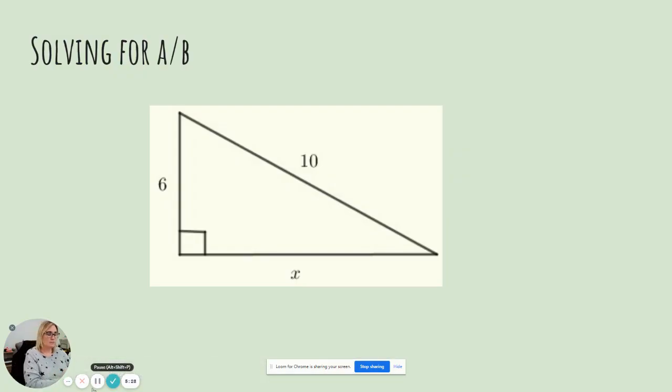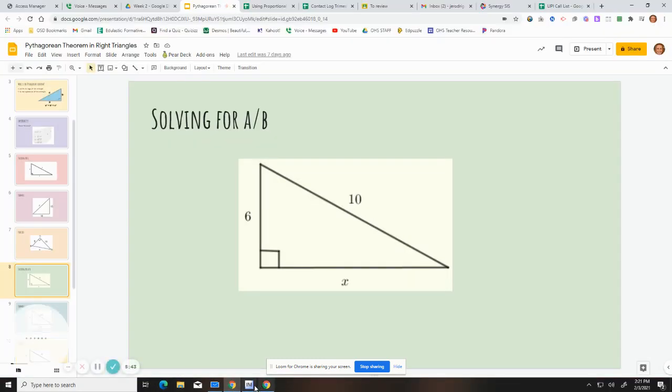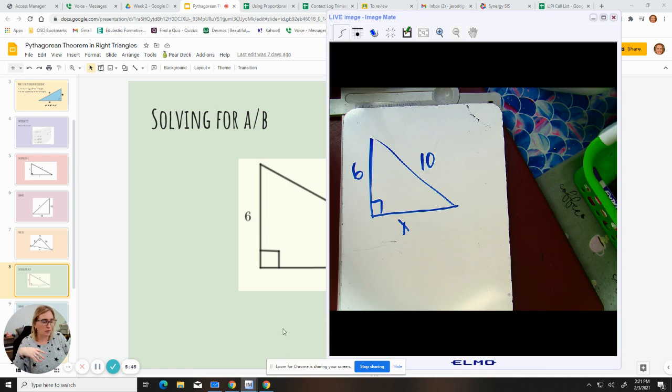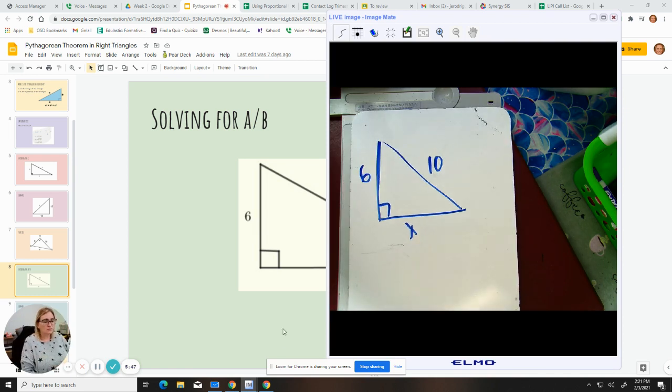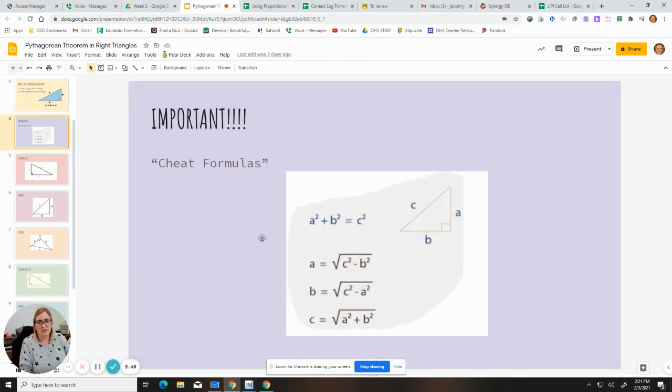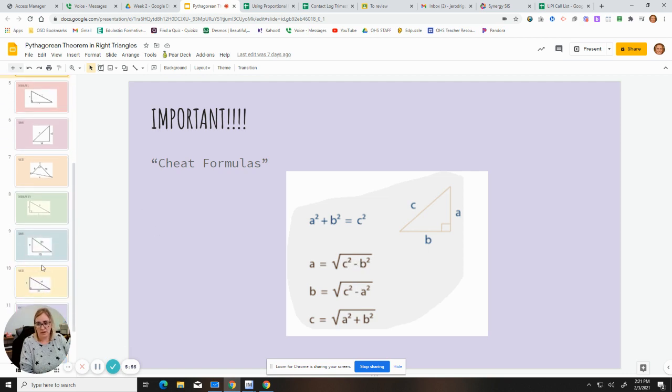So this next one is going to be solving for A or B. It doesn't matter because in Pythagorean theorem, they are interchangeable. So if it asks you for A or B, you can pretty much put in one for the other. It's not going to change your overall answer. So let's go ahead and pull this up. This one, if we go back to this cheat, we're going to use one of these formulas where we're going to have to subtract from C squared.